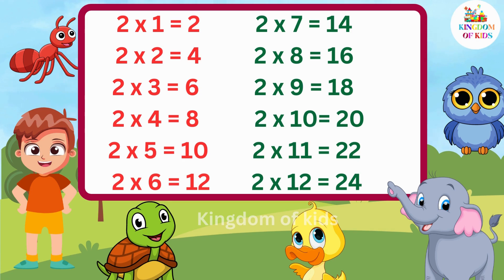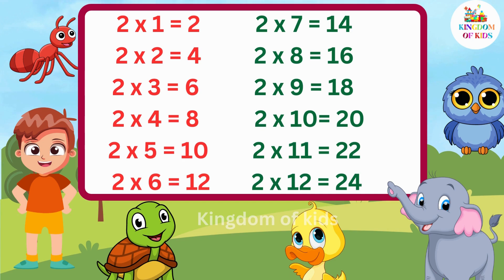Let's try once again. 2 1's are 2. 2 2's are 4. 2 3's are 6. 2 4's are 8. 2 5's are 10. 2 6's are 12. Two sevens are fourteen. Two eights are sixteen. Two nines are eighteen. Two tens are twenty. Two elevens are twenty-two. Two twelves are twenty-four.